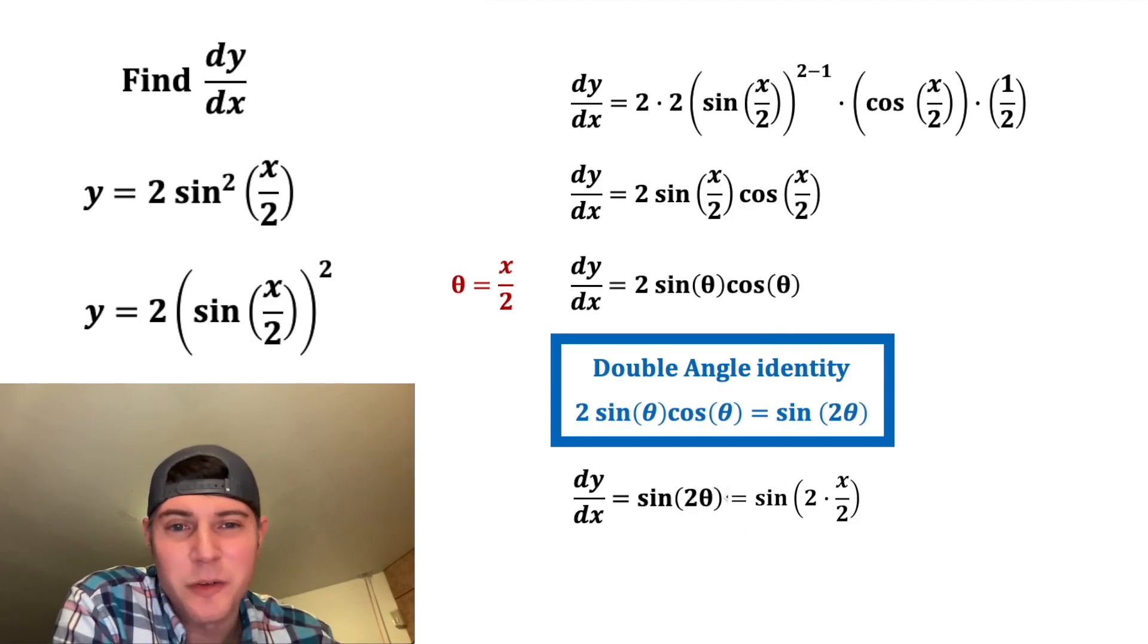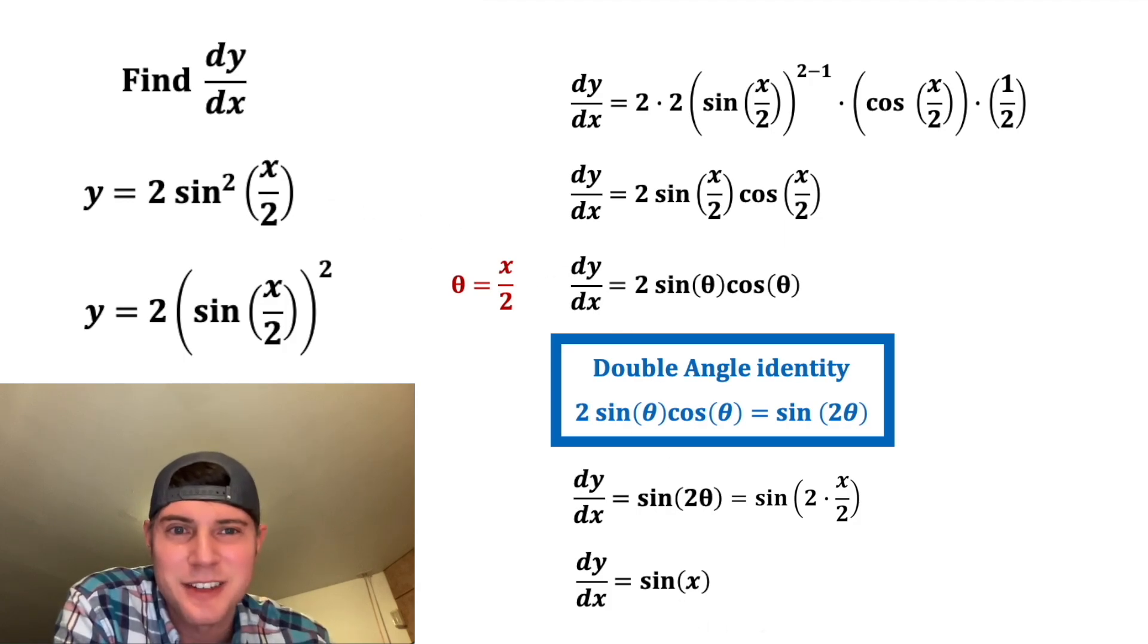And then we can substitute x over 2 in for theta, and that simplifies to sine of x. So the derivative of y equals 2 sine squared of x over 2 is sine of x. Isn't that neat?